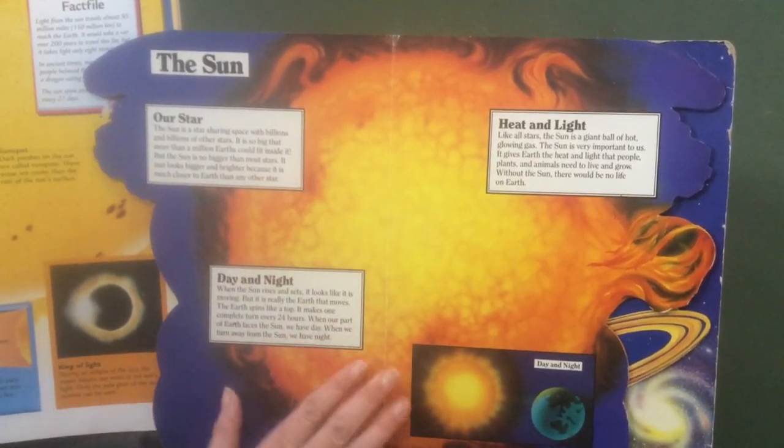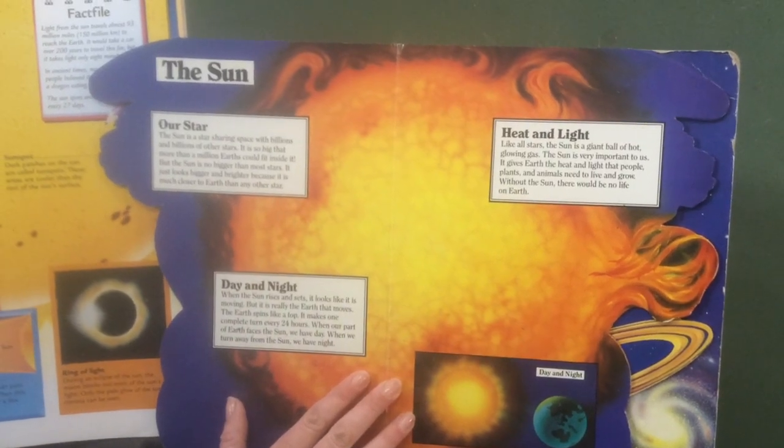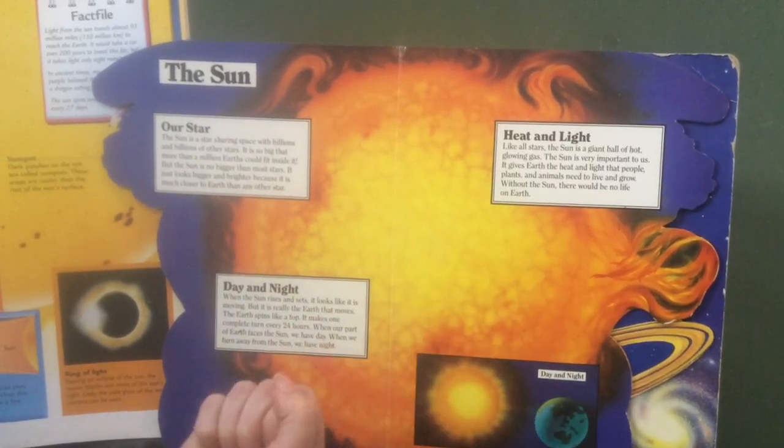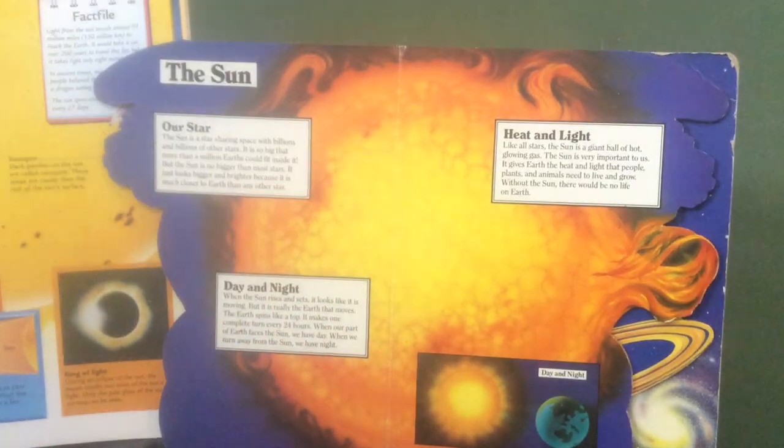But the sun is no bigger than most stars. It just looks bigger and brighter because it's much closer to the earth than the other stars.